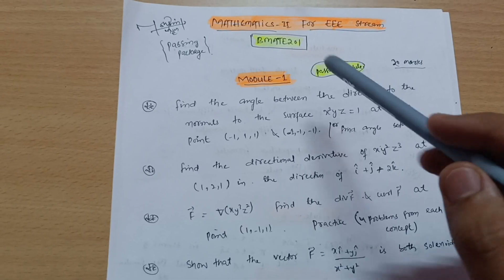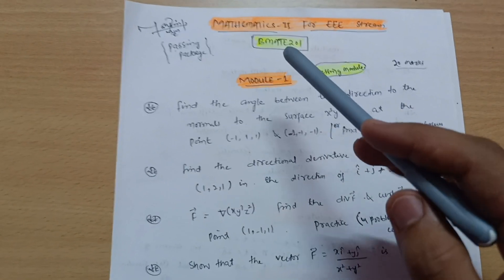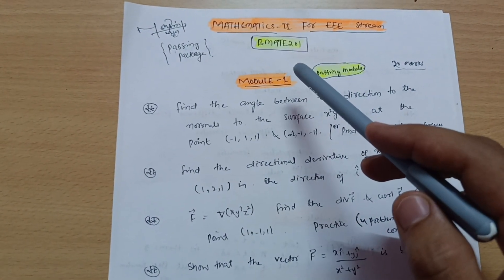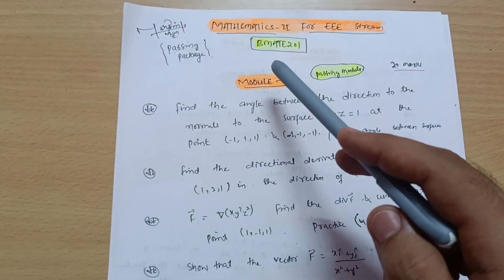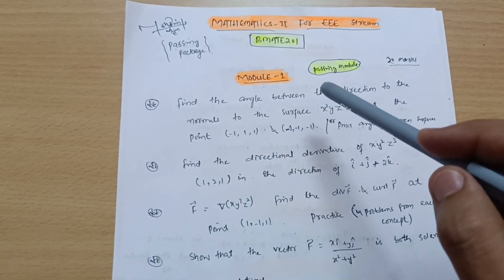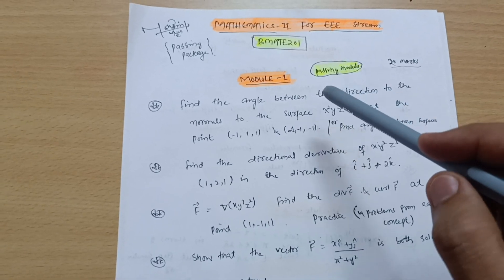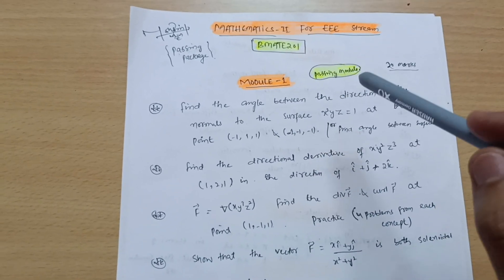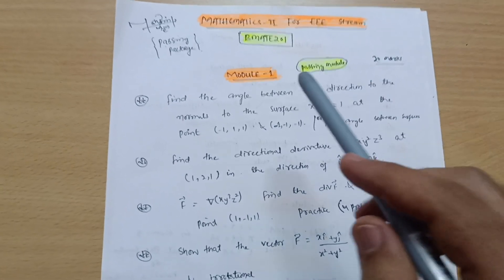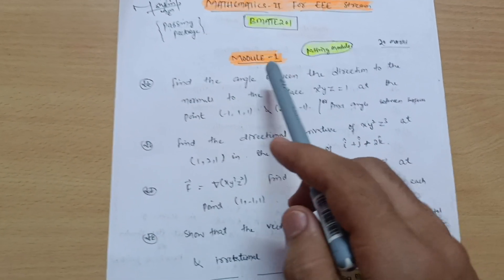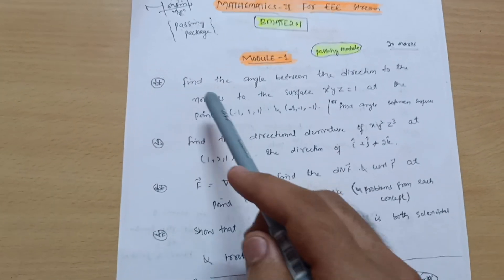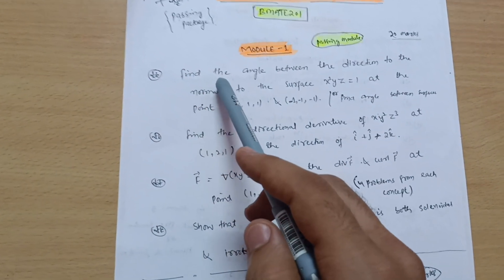Let us start with the passing package for Mathematics 2 for triple-E stream students. The second semester subject code is BMAT-E201. I will discuss the passing modules — first for students who want to pass the subject. They should refer to Module 1 first, which consists of 20 marks and you can easily grab it.